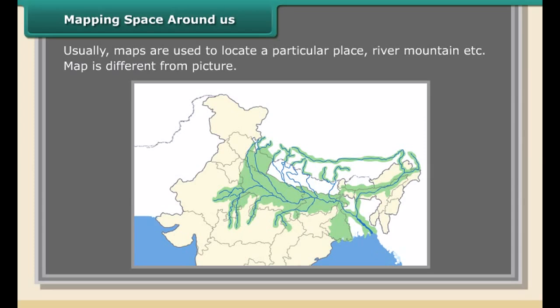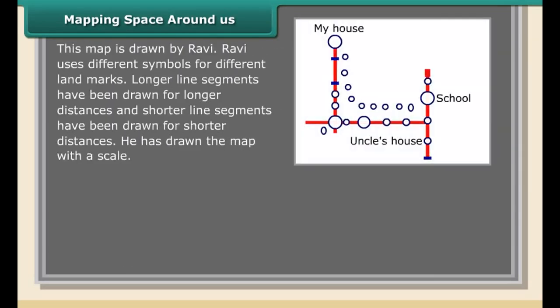Mapping space around us: usually maps are used to locate a particular place — river, mountain, etc. A map is different from a picture. This map is drawn by Radha, and in this map the route from her house to her uncle's house is shown.